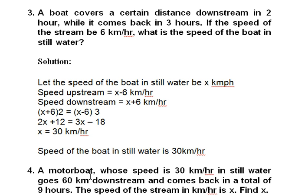Third question: a boat covers a certain distance downstream in two hours while it comes back in three hours. If the speed of the stream is 6 kilometers per hour, what is the speed of the boat in still water? We assume the speed of the boat in still water is x km/h. For upstream, we subtract the stream speed: x − 6 km/h, because when travelling upstream you travel against the current, so it gets neutralized.